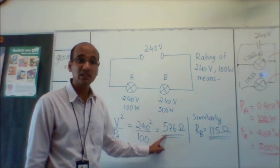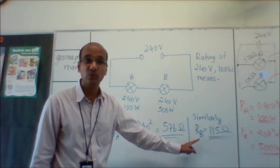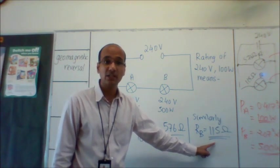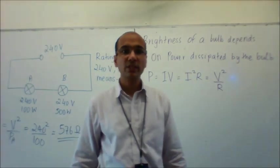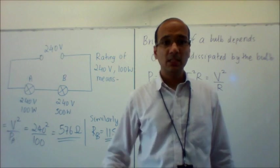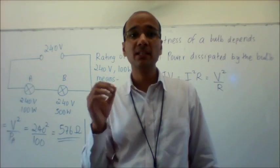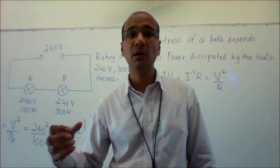I can do a similar calculation for bulb B, which gives 115 ohms. Now we come to the next part of the problem, which requires us to compare the brightness of bulb A with bulb B.